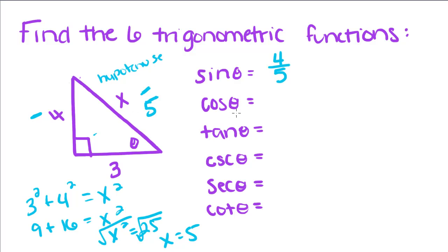So, cosine is adjacent over hypotenuse. Next to it is 3 over the hypotenuse, which stays the same. Tangent is opposite, which is 4, over adjacent, which is 3.